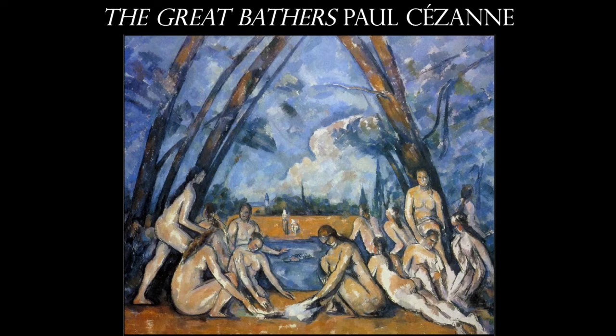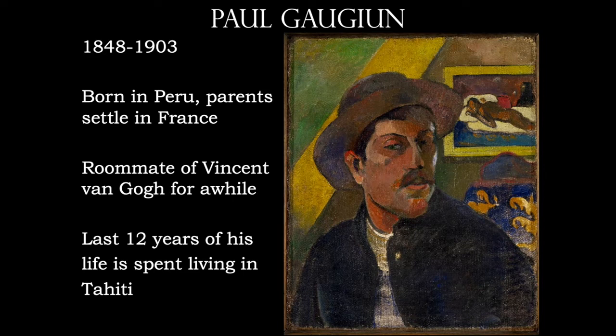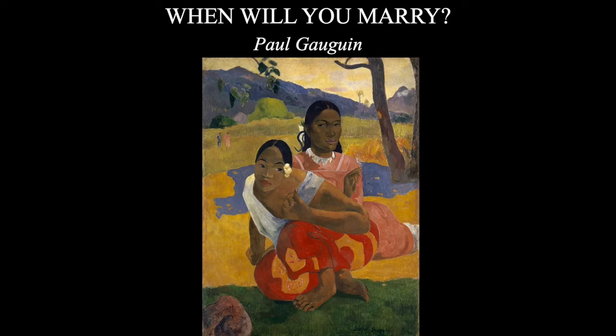In The Great Bathers, Cézanne uses arbitrary color, which leads us toward Fauvism. Paul Gauguin also falls into the Post-Impressionist classification — we'll learn more about him during the Van Gogh lecture. He was Vincent van Gogh's roommate during his time in Arles in the south of France, and spent the last 12 years of his life in Tahiti painting images of natives. One of his Tahitian paintings is among the 10 most expensive paintings ever purchased at auction.